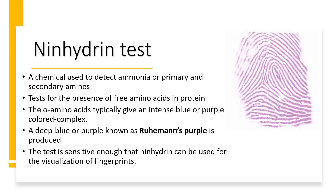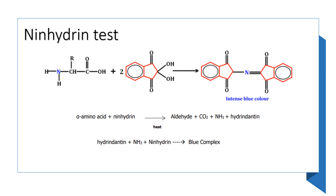The ninhydrin test is a chemical test used to detect ammonia or primary and secondary amines. It tests for the presence of free amino acids in protein. The alpha amino acids typically give an intense blue or purple colored complex — a deep blue or purple known as Ruhemann's purple. This test is sensitive enough that ninhydrin can be used for the visualization of fingerprints. Ninhydrin is reduced to hydrindantin during reaction with the alpha amino group. The amino acid is converted into an aldehyde, ammonia, and carbon dioxide. Hydrindantin and ammonia then interact with another molecule of ninhydrin to form a purple colored product, indicating a positive result.